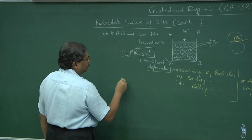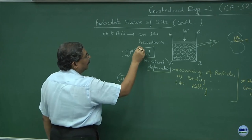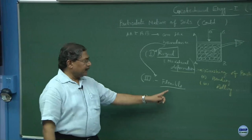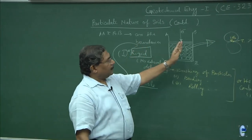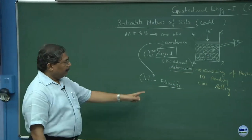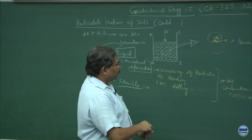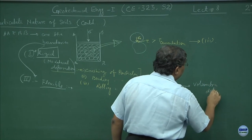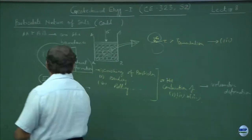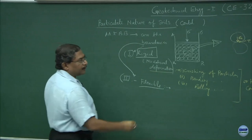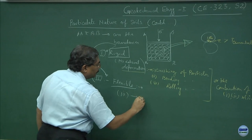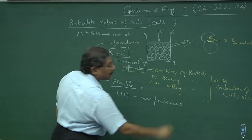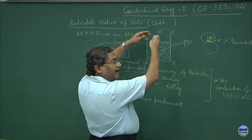The second mechanism is when the boundaries are flexible. The chances are that the boundaries confining the soil mass would be flexible. One more thing to add is that the rigid case causes volumetric deformation. However, when the system is flexible, mechanism 3 — rolling — becomes more predominant.